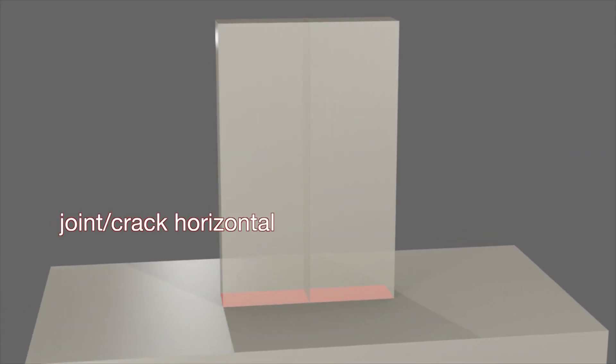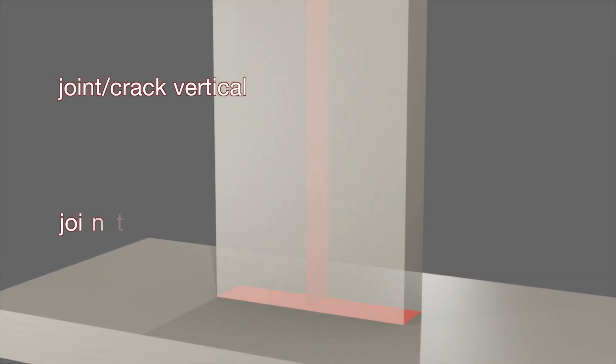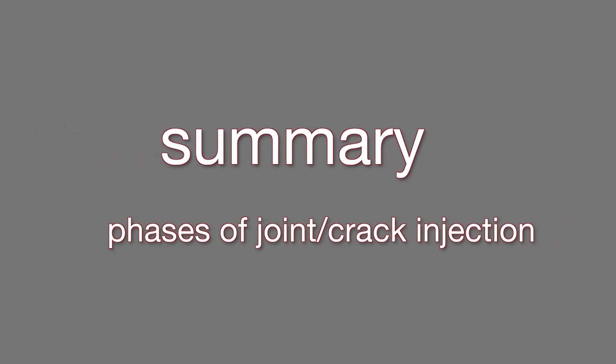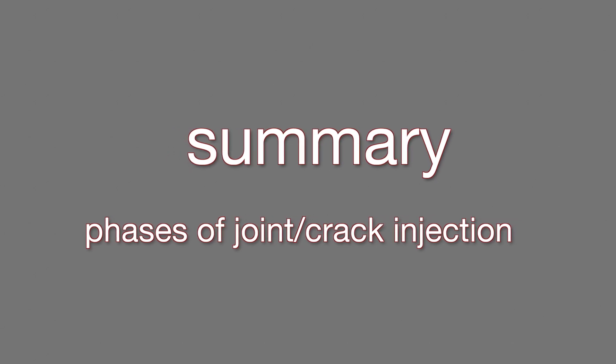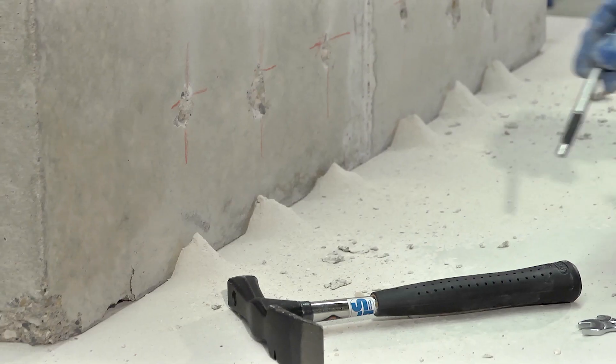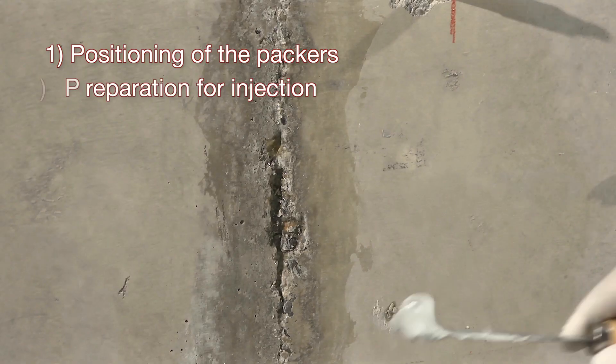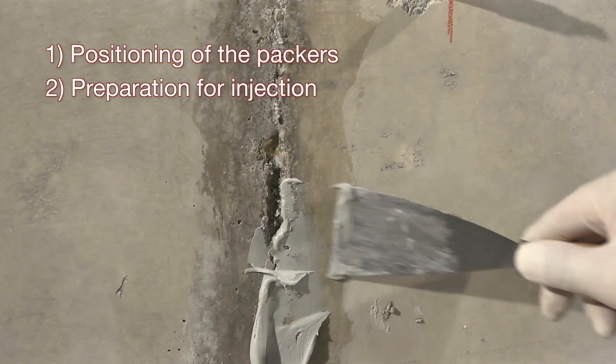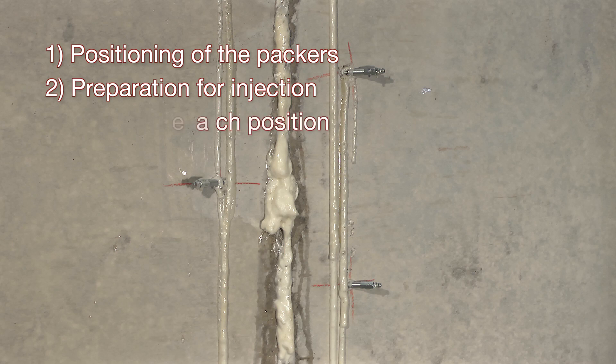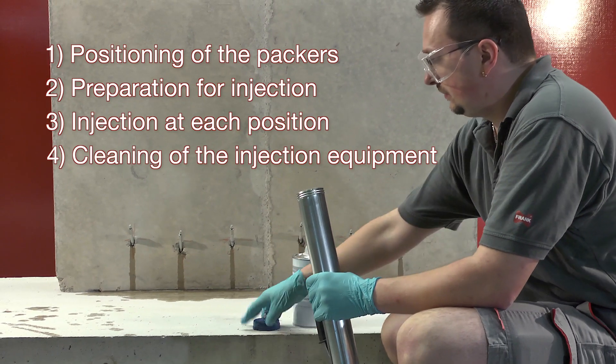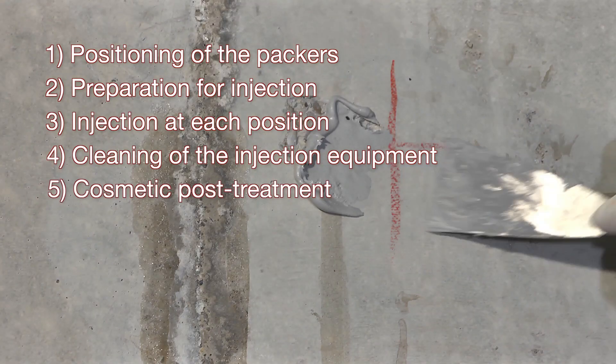A joint or crack sealing process requires four to five phases, each with several individual procedures: one, positioning of the packers; two, preparation for injection; three, injection at each position; four, cleaning of the injection equipment; five, cosmetic post treatment.